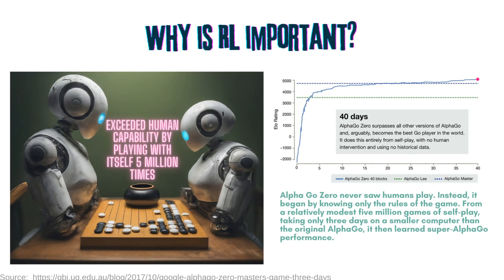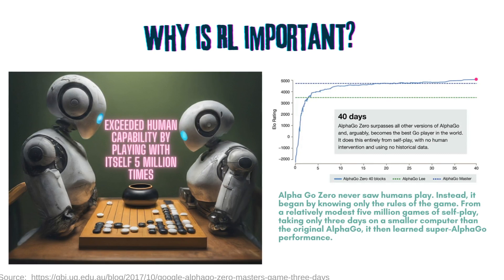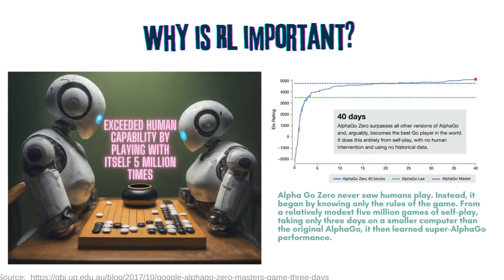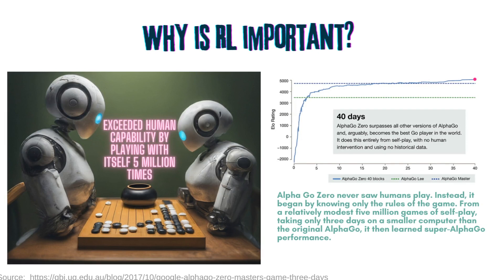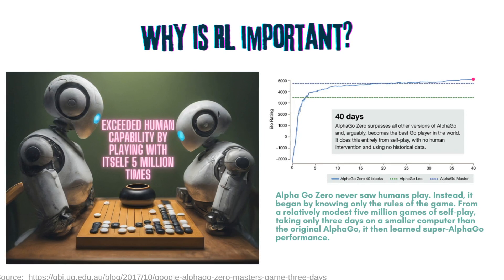When Google DeepMind first started to develop AlphaGo, they gave the system access to the play history of human masters to learn from. Later, they developed AlphaGo Zero, which had no historical play data to learn from. The researchers just set the RL algorithm to play against itself. It was given no guidance from human experts, only told the rules of the game. After playing over five million games, it learned from this synthetic experience and can play better than the best human.